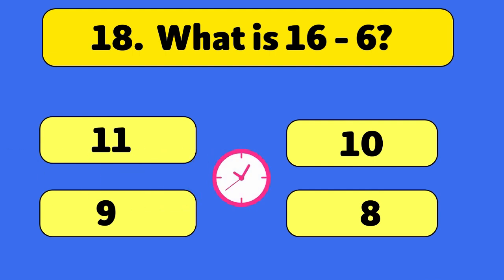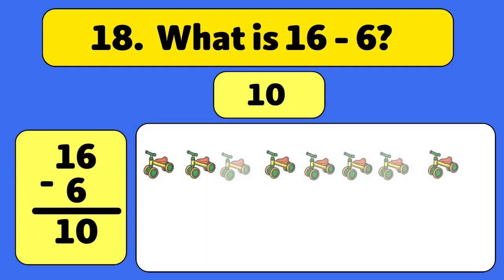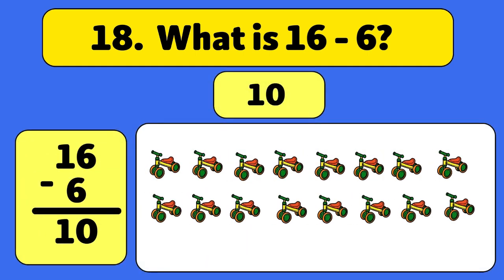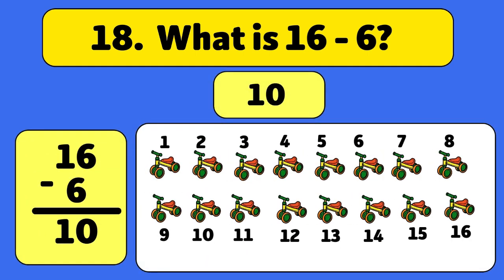We start with 16 bicycles and take away six. Let's count. One, two, three, four, five, six. We have ten bicycles left.